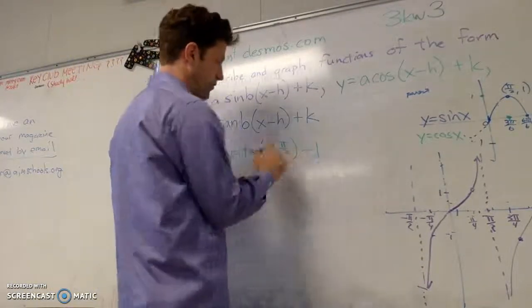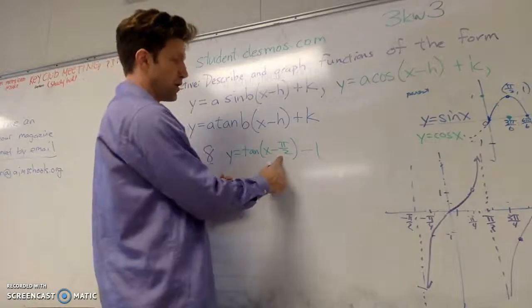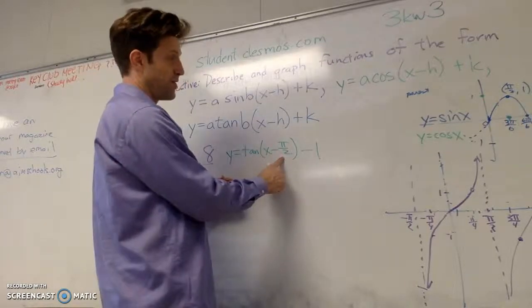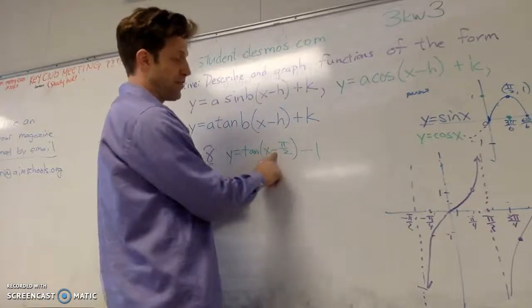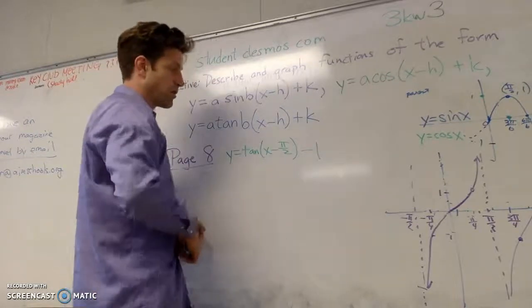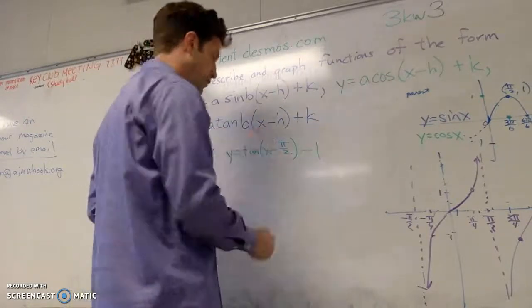So that's what I'm translating with h and k here. That graph is going to move to the... it says negative, but that means I'm going to move to the right.